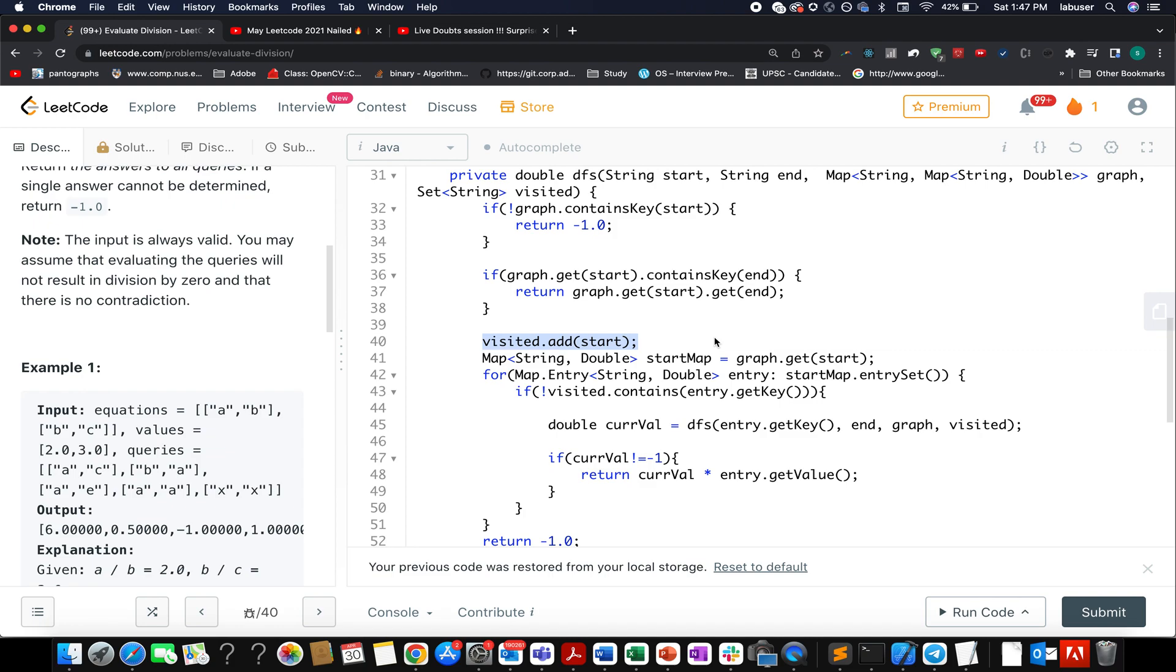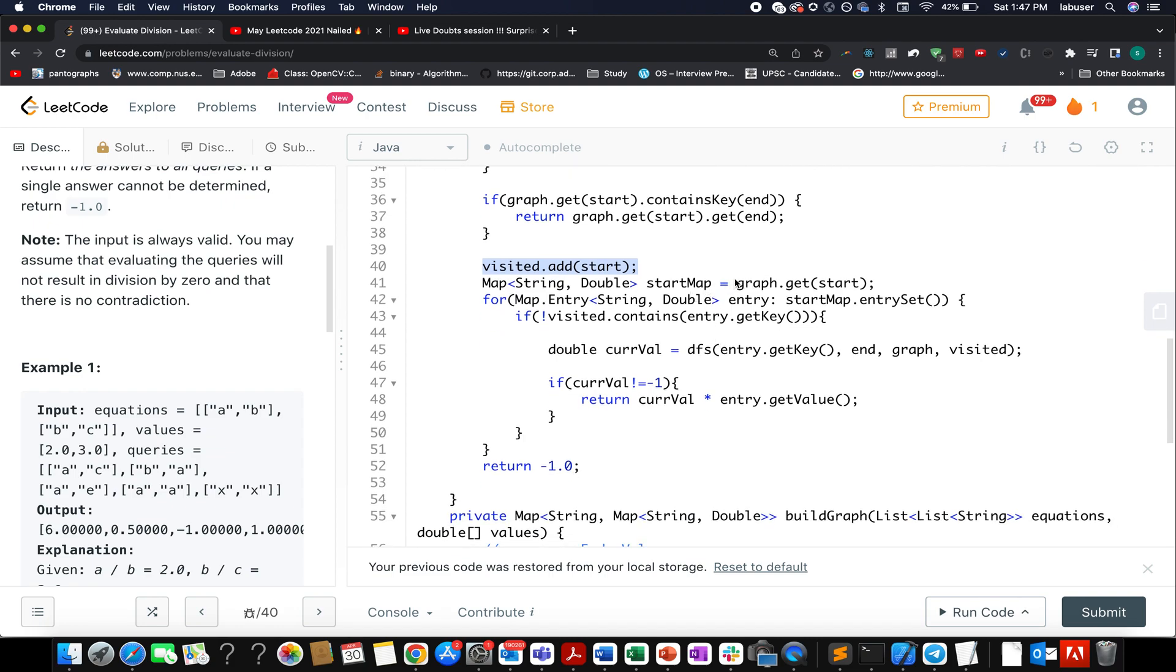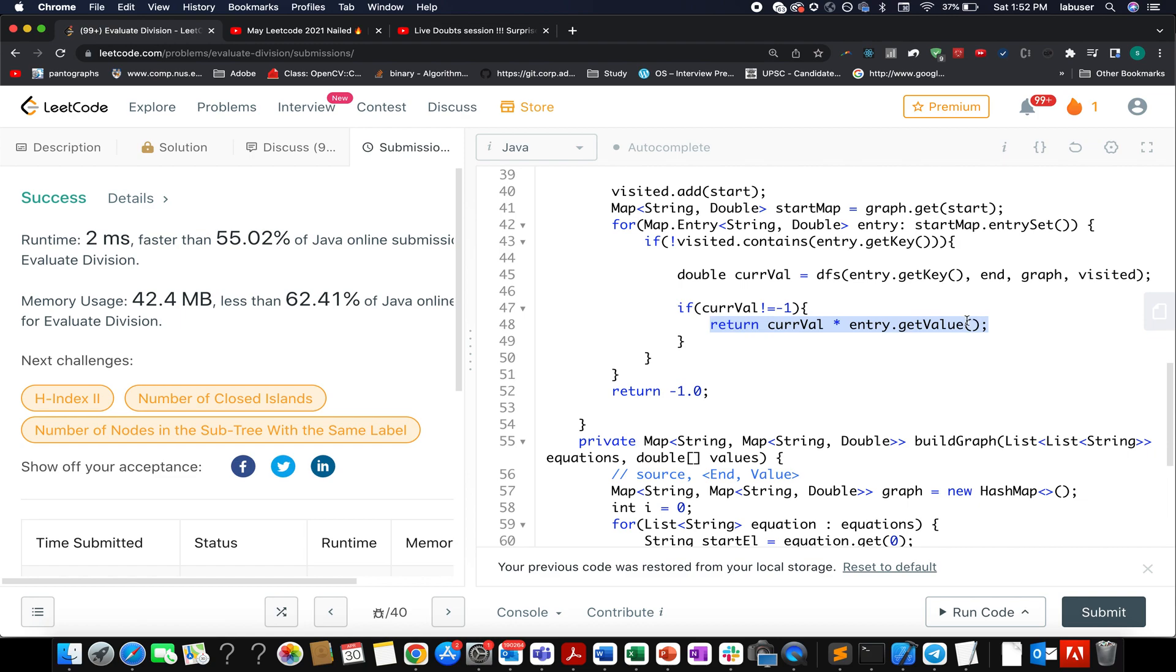Then I've iterated over all the connections I have starting from the start node. I check whether the terminal node was part of the visited set. If it's not part of the visited set, I invoke DFS traversal on that. If the value returned from DFS is not equal to -1, that means the path exists. I multiply my current value with entry.getValue and return it. If this condition is never met, the path doesn't exist, so we return -1.